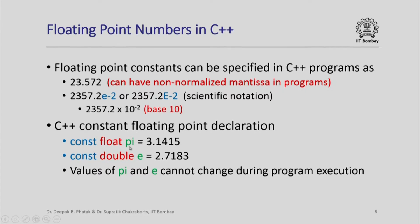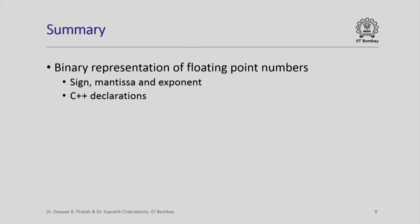In summary, what we studied in this lecture is the binary representation of floating point numbers. The components of the representation are: a sign bit, a certain number of bits for the mantissa stored in normalized form, and a certain number of bits for the exponent which can be a positive or negative integer. We have also seen how to declare floating point variables in C++.